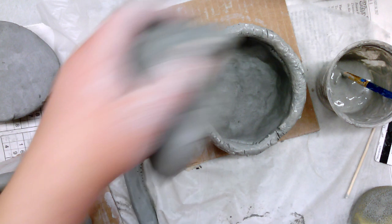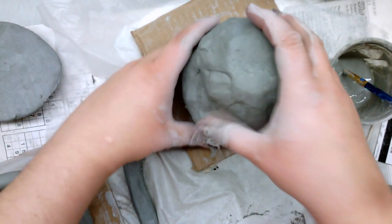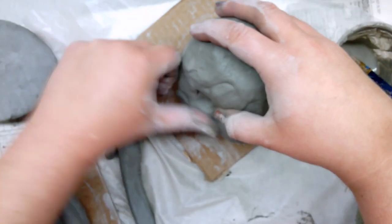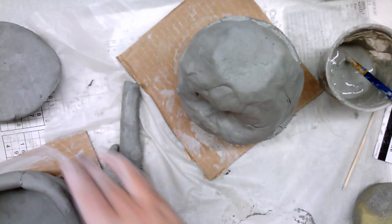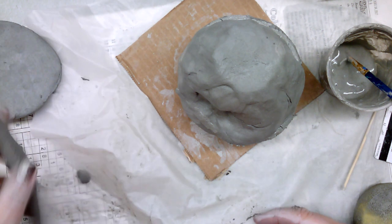I've scored and slipped both pieces. Now I'm just going to set it on there and push down to make an egg-like shape.